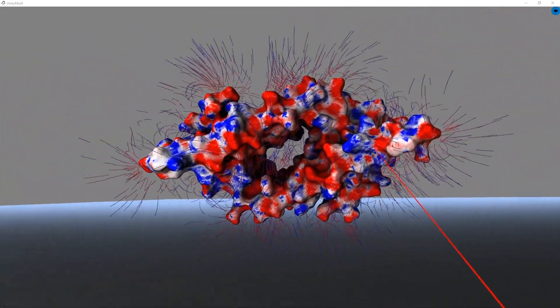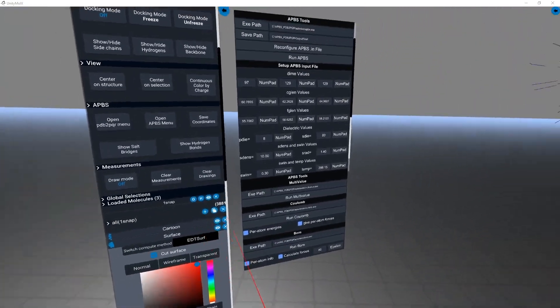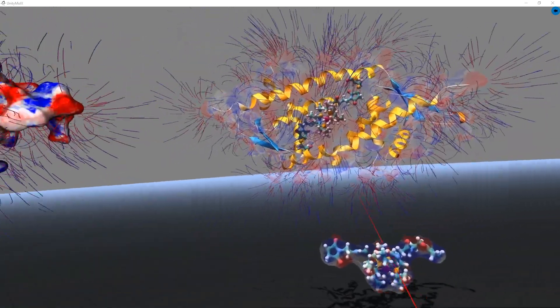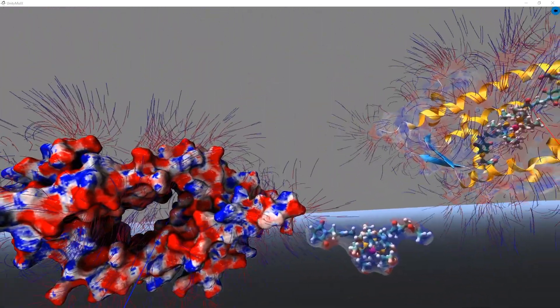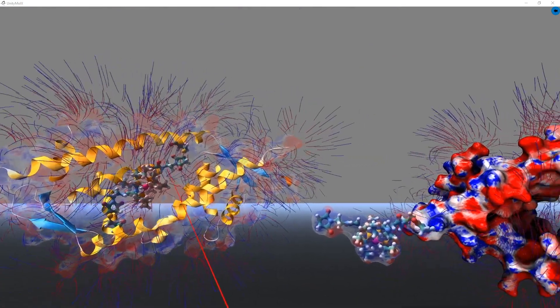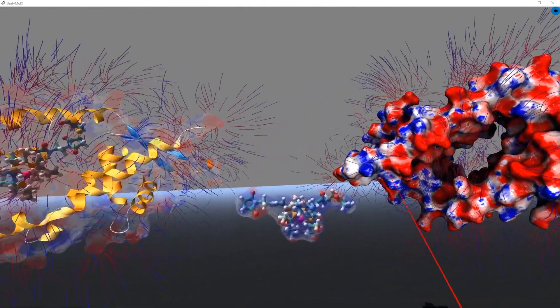Let's go back and set the enzyme surface back to transparent. As you can see, using a virtual world, it is very easy to manipulate multiple three-dimensional objects.